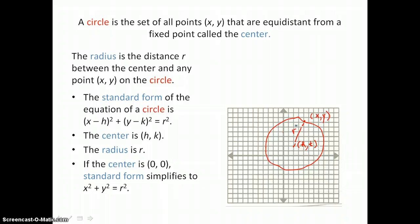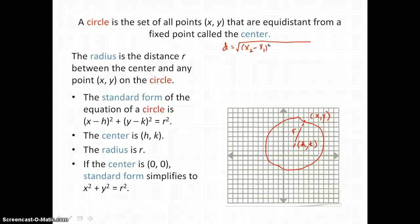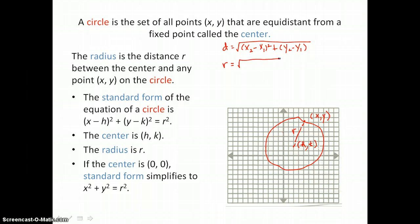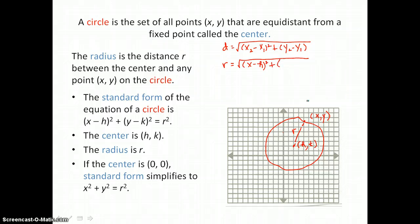To write the equation of a circle, all we need to do is use our distance formula. Remember, the distance is equal to the square root of the difference in x coordinates squared plus the difference in y coordinates squared. So the radius is the distance we find using this formula. One ordered pair is the center, and the other is the point x, y. The difference in x coordinates is x minus h, squared, and the difference in y coordinates is y minus k, squared.